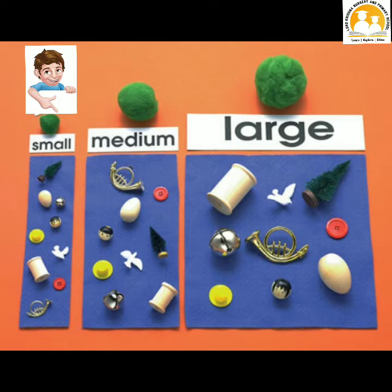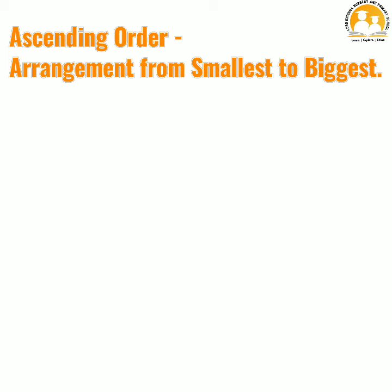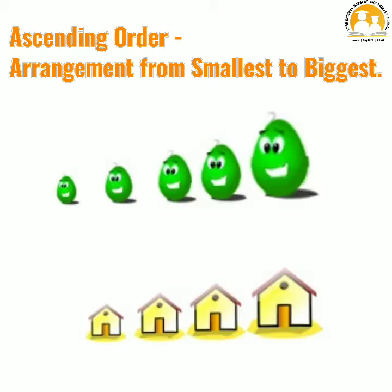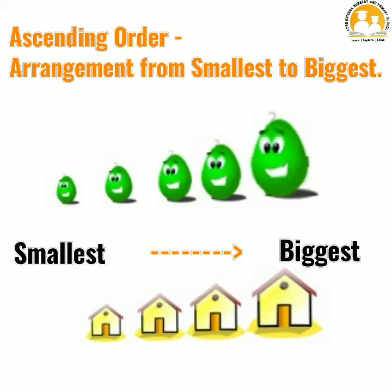Arranging from smallest to biggest is called ascending order. Repeat along with me children: ascending order. What is an ascending order? Arranging objects from smallest to biggest.